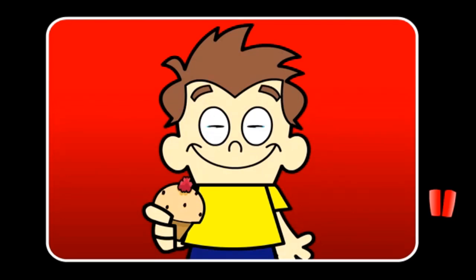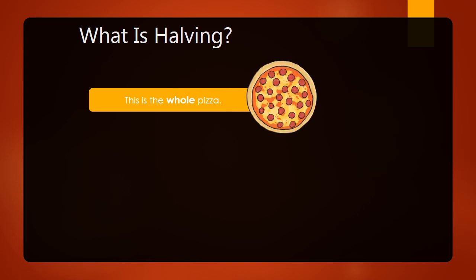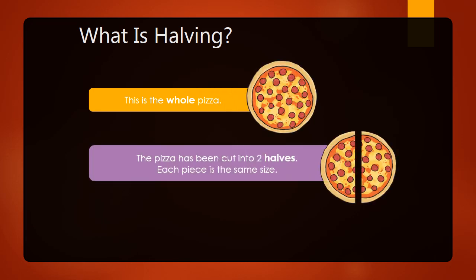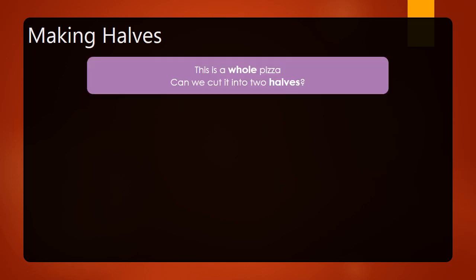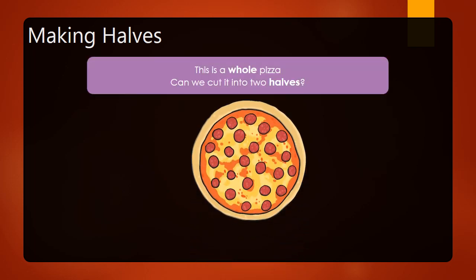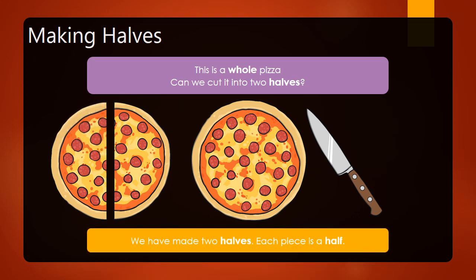So sharing is fun! Now, what is halving? This is the whole pizza. The pizza has been cut into two halves — each piece is the same size. This is one half of the pizza. Making halves: here is a whole pizza — can we cut it into two halves using a knife? Yes, we have made two halves. Each piece is a half — one half.